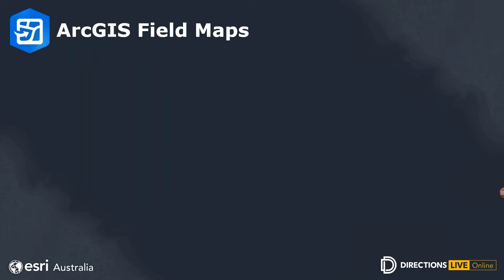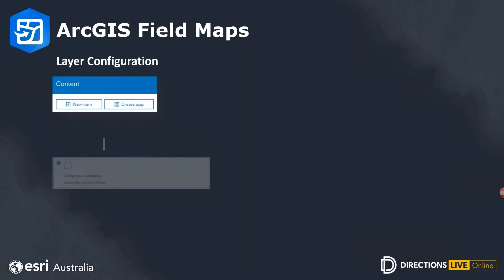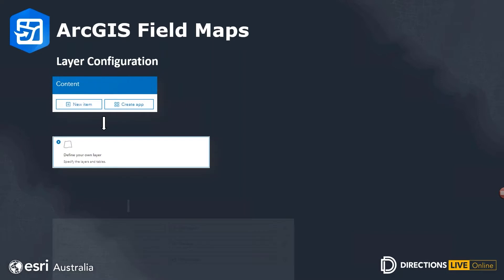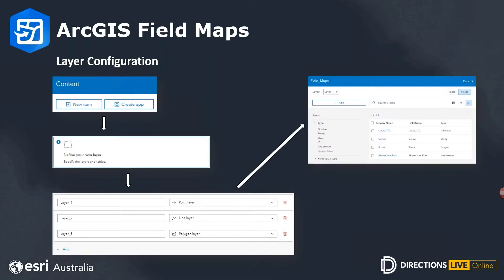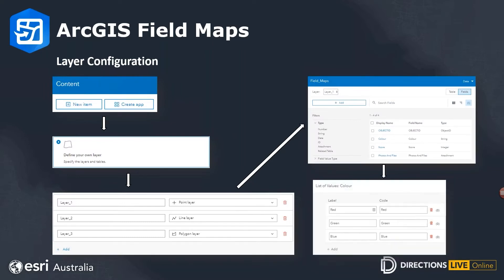The first stage of configuring your Field Maps project is to configure your hosted feature layer. In this case, we are creating a new layer containing three different geometry types: points, lines, and polygons. Afterwards, you should add your required fields to the layer, and if needed you may add a list of values — otherwise referred to as a domain — which constrains acceptable values for a field. You can also choose to use a feature template to assist with this.